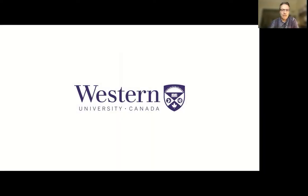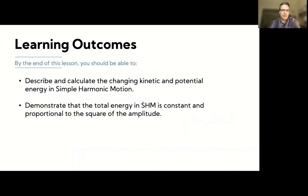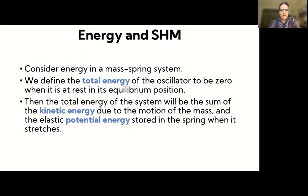The last topic to cover with respect to simple harmonic motion is energy in SHM. By the end of this lesson you should be able to describe and calculate the changing kinetic and potential energy in simple harmonic motion, demonstrate that the total energy is constant and proportional to the square of the amplitude. We'll focus on mass-spring systems, but the results apply generally to all systems in simple harmonic motion.